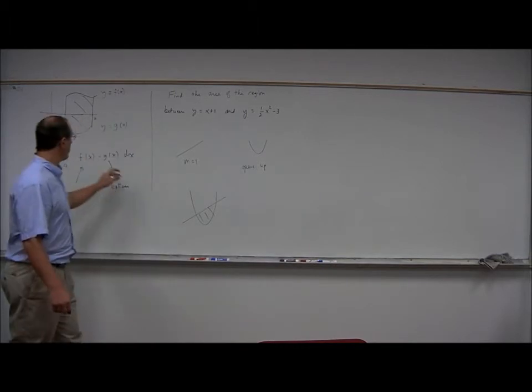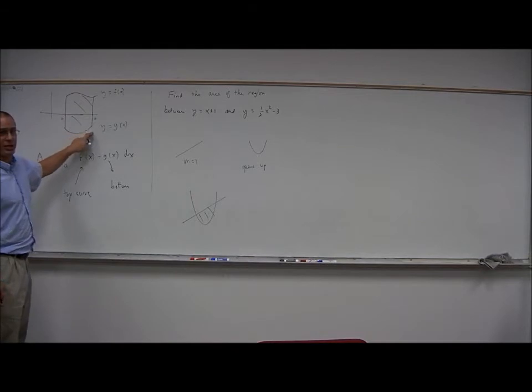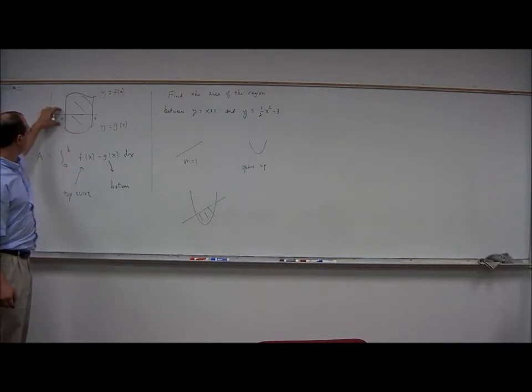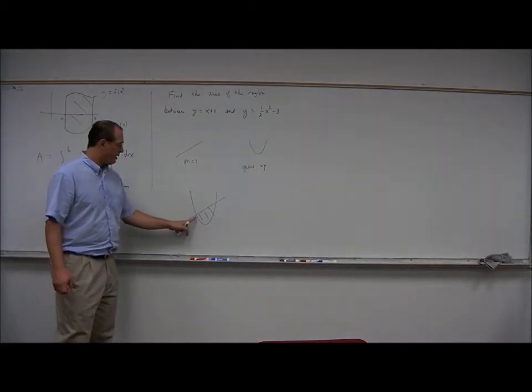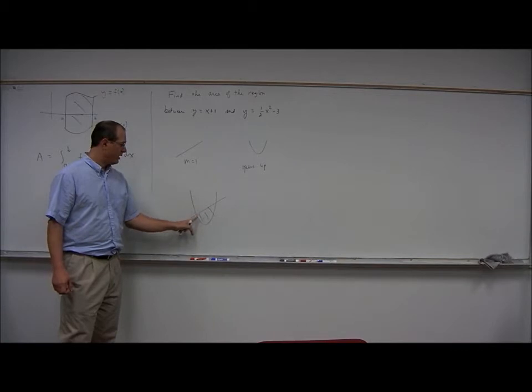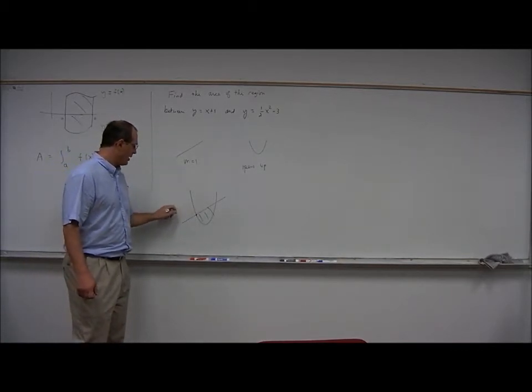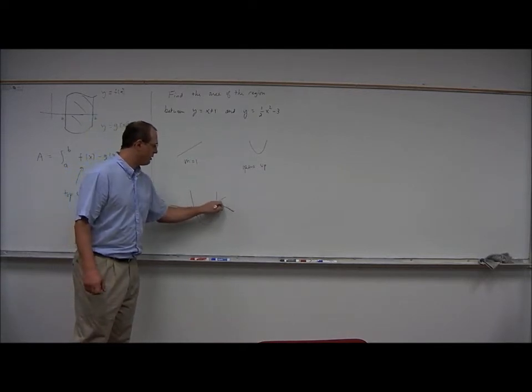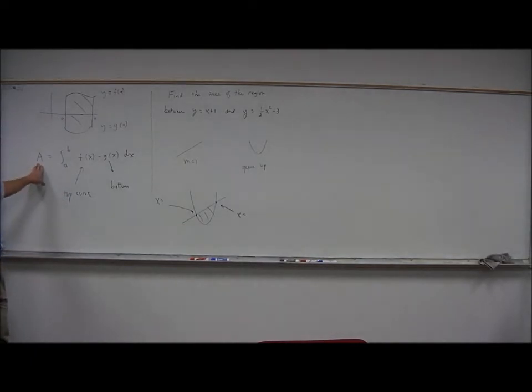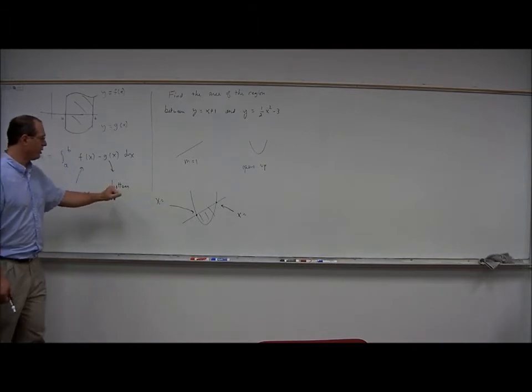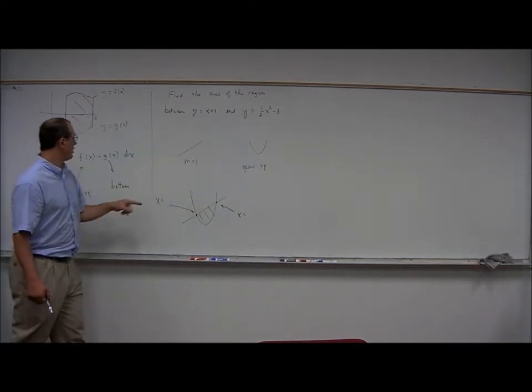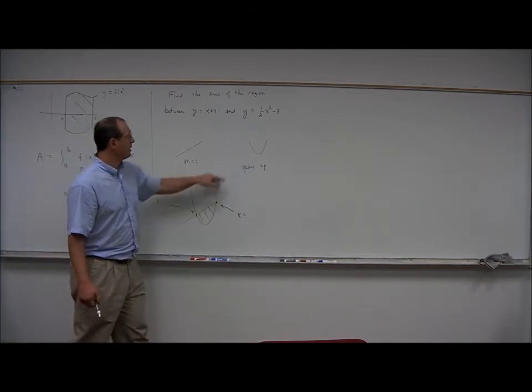The difference between this region and what I've drawn here is that the boundaries x equals A and x equals B were slightly arbitrary. They were just vertical boundaries imposed in the region, whereas here, the left and right boundaries are naturally occurring. They are the intersection points of the two curves. So we would like to know the x-coordinate at each of these boundary points.